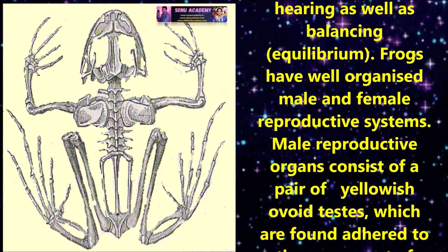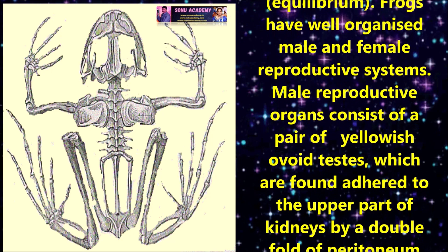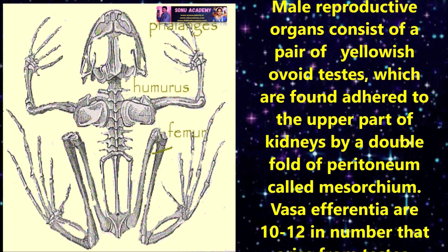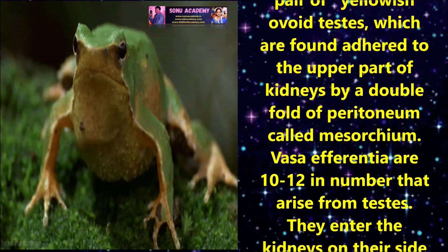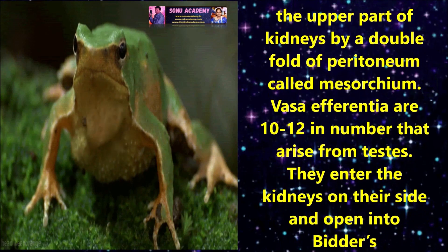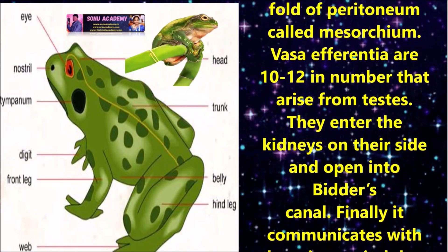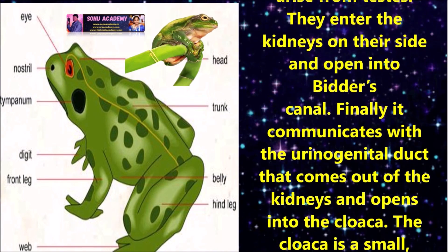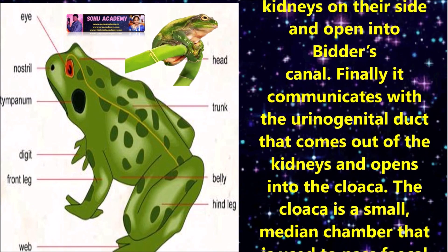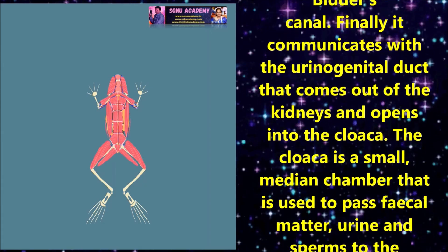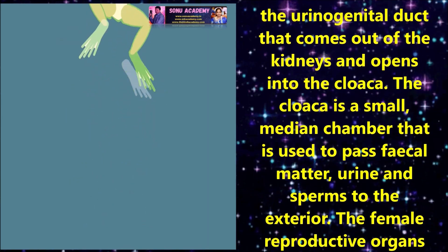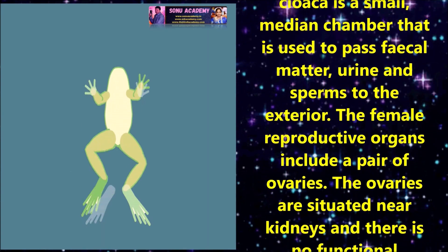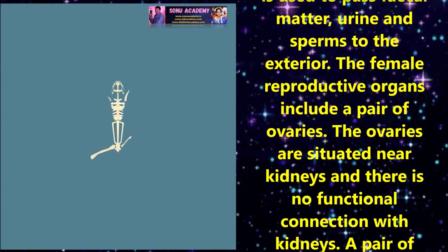Frogs have well-organized male and female reproductive systems. The male reproductive organs consist of a pair of yellowish ovoid testes, which are found adhered to the upper part of the kidneys by a double fold of peritoneum called the mesorchium. Vasa efferentia, 10 to 12 in number, arise from the testes and enter the kidneys, opening into a Bidder's canal. Finally, they communicate with the urinogenital ducts that come out from the kidneys and open into the cloaca. The cloaca is a small common chamber used to pass fecal matter, urine, and sperms to the exterior.